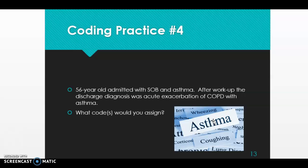Let's first code COPD — chronic obstructive pulmonary disease. Go to D for disease in the index, then to pulmonary disease on page 105, then indent to chronic obstructive, then pick 'with acute exacerbation' — which our scenario documents — giving us J44.1. Now flip to the tabular to J44.1 on page 688 to verify the code description and check the notes.